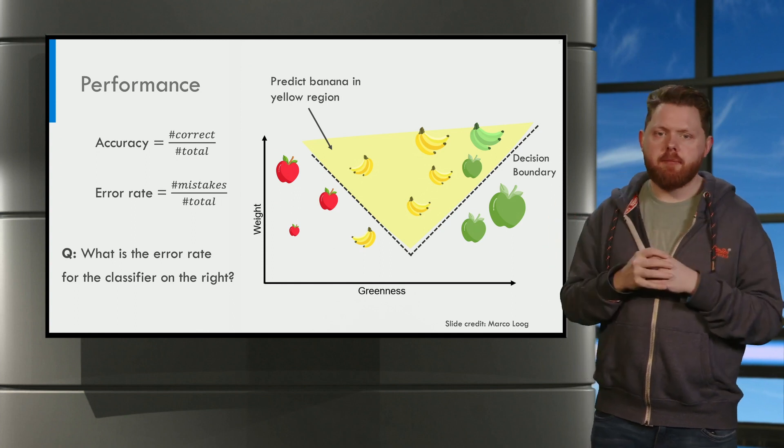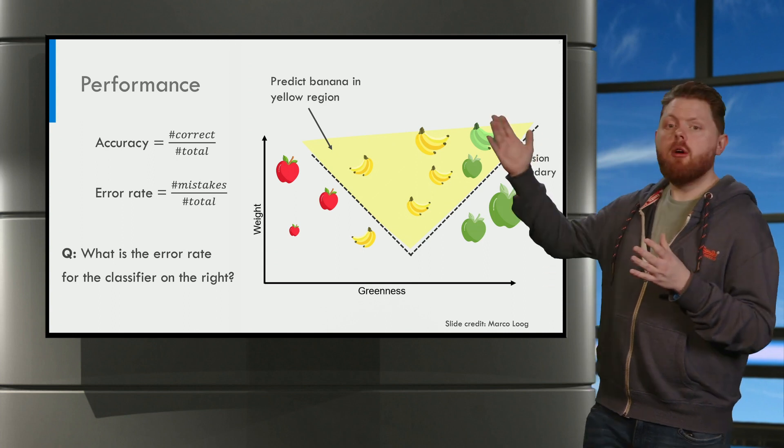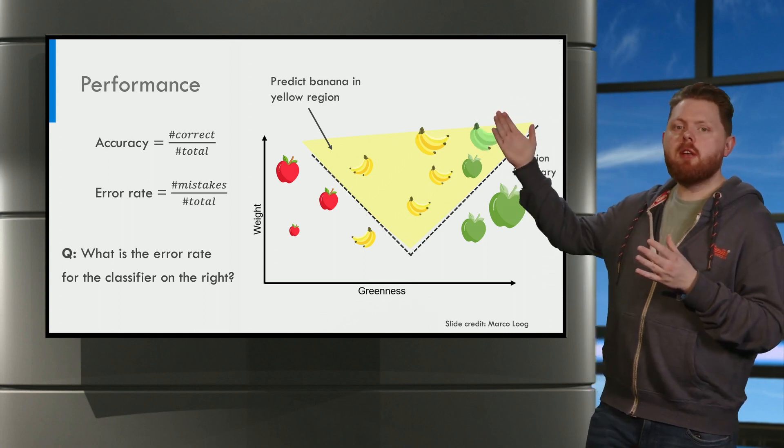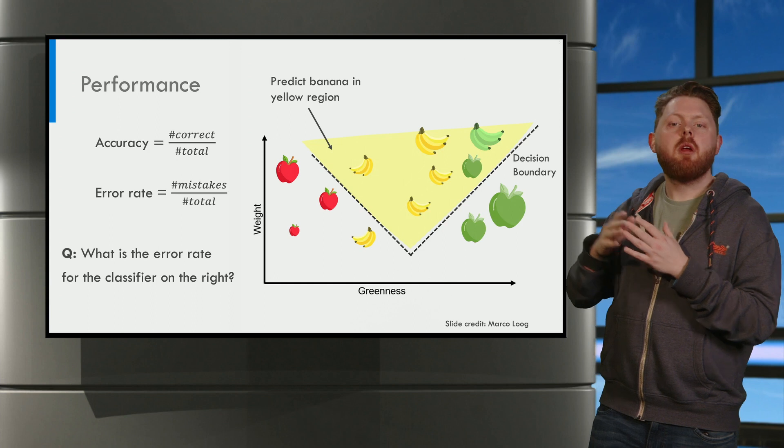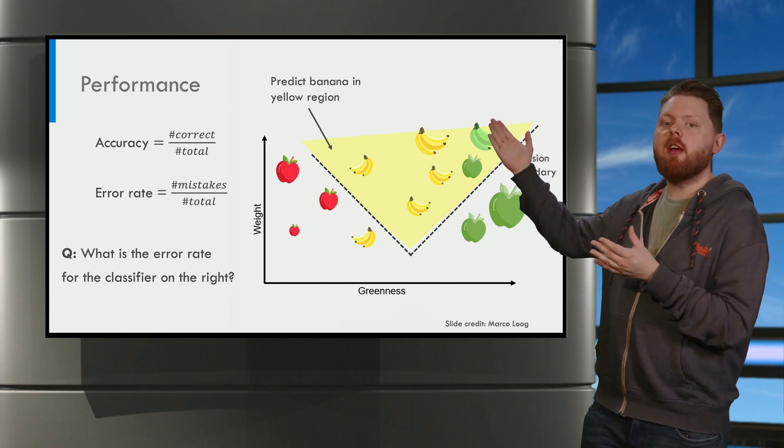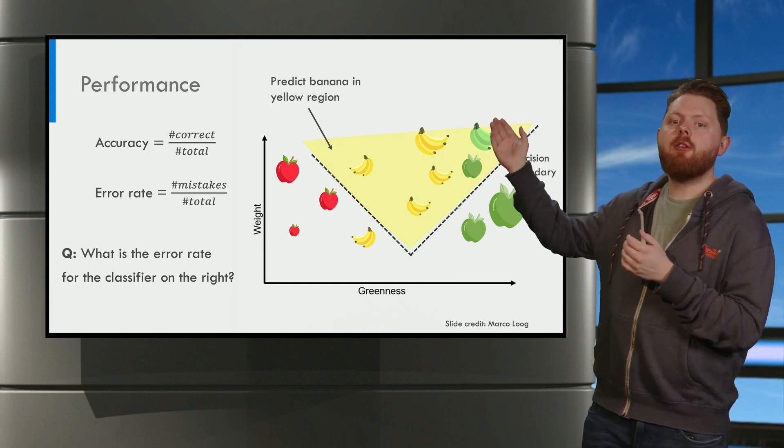Okay, welcome back. Here on the right, we see that two objects are misclassified. That is, one banana is misclassified and one apple is misclassified.